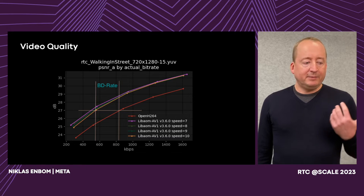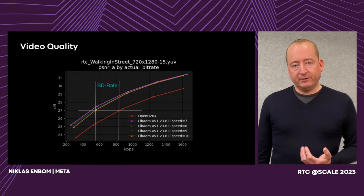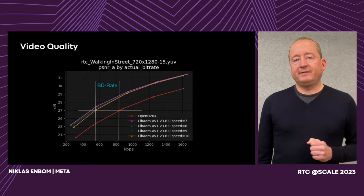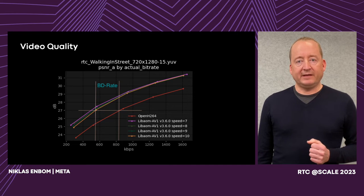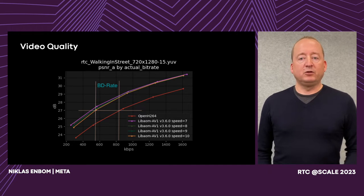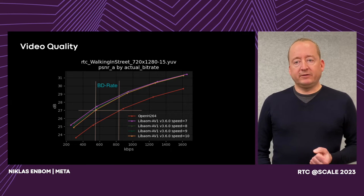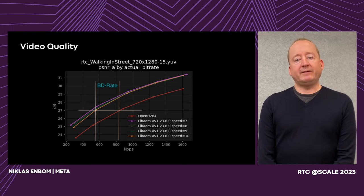Most of the time we are not going to use bitrate savings to actually save bandwidth — we're going to use that to deliver higher quality to our users. There have been a lot of improvements in connectivity and mobile networks, but for us we still see that 20% of our video calls end up using less than 200 kilobits per second. And especially for those users, these changes will have a large impact on the quality of experience.